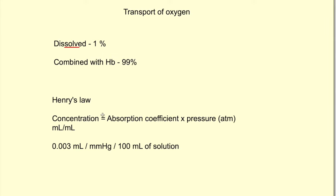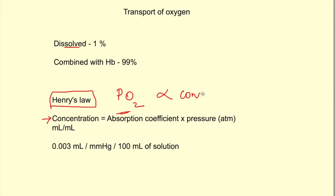The amount of oxygen carried by the dissolved form can be determined by Henry's Law, which states that the partial pressure of a gas dissolved in a liquid is directly proportional to the concentration of that gas in the liquid. This is calculated by the formula: concentration equals the absorption coefficient — which depends on the solubility of the gas in blood — multiplied by the pressure of the gas.